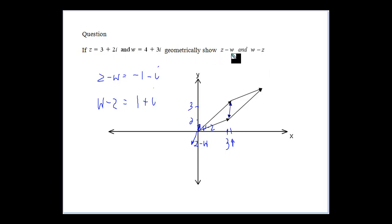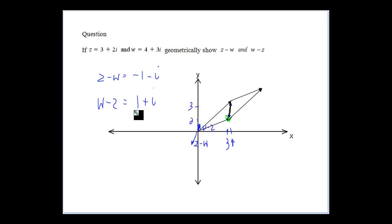We've got two complex numbers. What we want to do is show Z minus W and W minus Z. If we get Z minus W: 3 minus 4 is minus 1, 2i minus 3i is minus i. So we get minus 1 minus i — that's Z minus W. We could put that as a free vector going in that direction — it's a diagonal of that parallelogram. And then 1 plus i would be a vector in this direction, going the opposite way. So there's our two, geometrically showing Z minus W and W minus Z. It's the same distance, just going in the opposite direction, which we proved before with the subtraction of vectors.